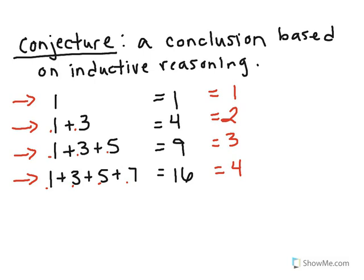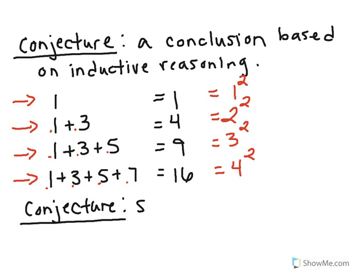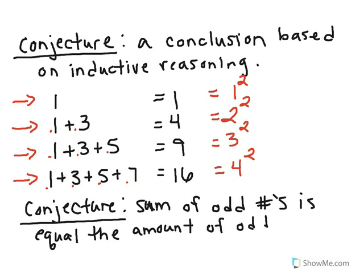How can I make this 1, 2, 3, and 4 look just like 1, 4, 9, and 16? Do you see the pattern? Watch what happens if I square the numbers in red. 1 squared is 1, 2 squared is 4, 3 squared is 9, and 4 squared is 16. So the pattern here, my conjecture that I see is that the sum of odd numbers is equal to the amount of odd numbers I have squared.